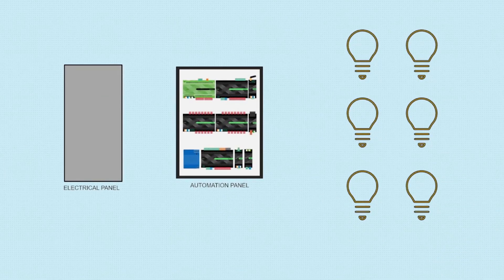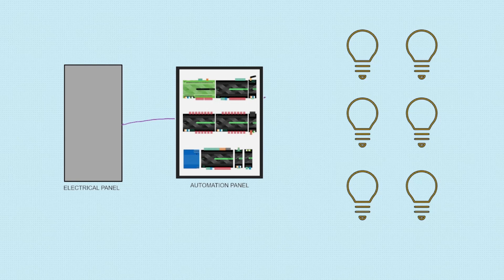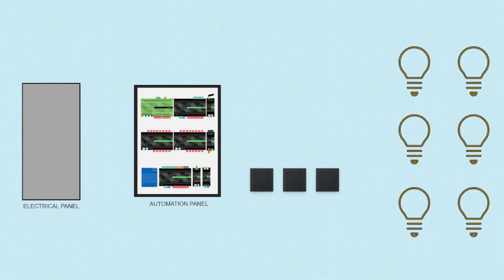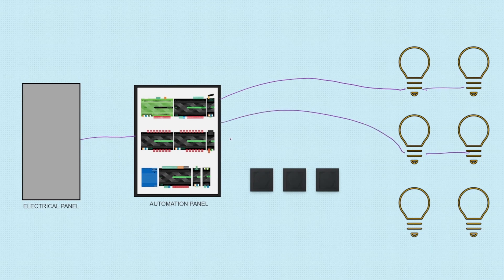Now let's take a look at it in Loxon. The big difference here is the switches are no longer where the wires will go to. Instead, from the electrical panel the line will go to the automation panel, and then from the automation panel it goes to each different circuit. Each circuit is still represented — one, two, and three — however this time there are no switches in that location, which leads to the question: well, where are the switches?